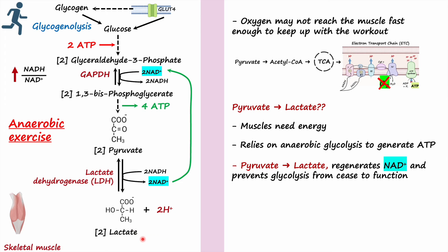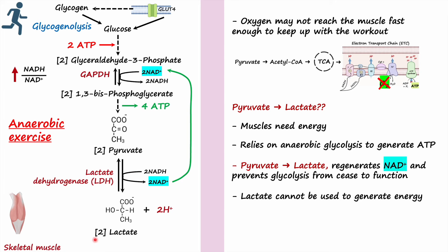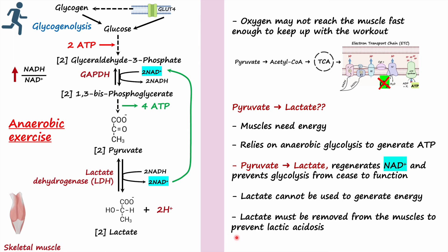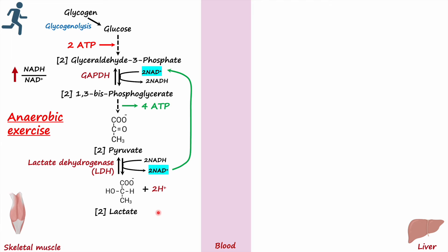Lactate is just a byproduct — it has no other function and cannot be used to generate energy directly. If too much lactate accumulates in skeletal muscle, it can cause lactic acidosis, so lactate must be removed. Lactate and the two hydrogen ions formed are transported into the blood through a transporter called MCT1 — the monocarboxylic acid transporter 1 — which can also transport hydrogen ions into the blood.